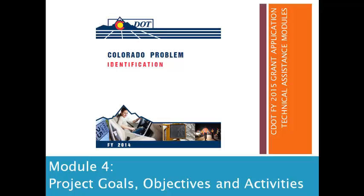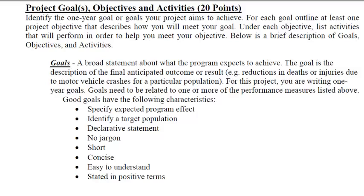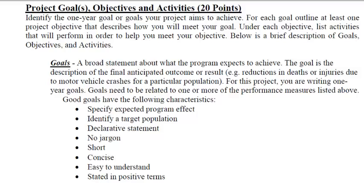So I guess we're ready to get started with these project goals, objectives, and activities. You can see here from the guidance that came with the application that this section is 20 points, which is a lot of points for this section. It gives some really specific criteria and explanation about what the difference is between goals, objectives, and activities.